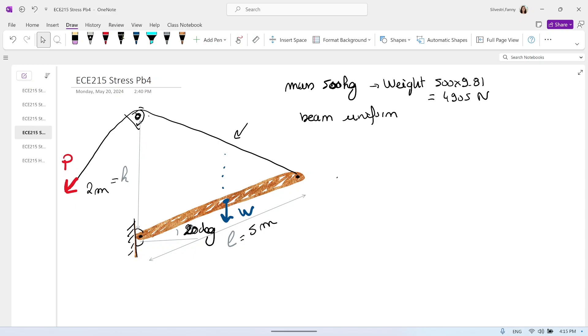So what we will do, we will do, to start with, free body diagram. So we will do the free body diagram of the beam. Beam like this. We have some forces that we know. The only force that we know is the weight.